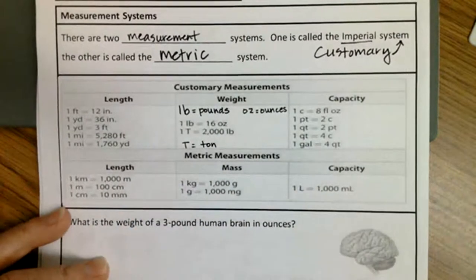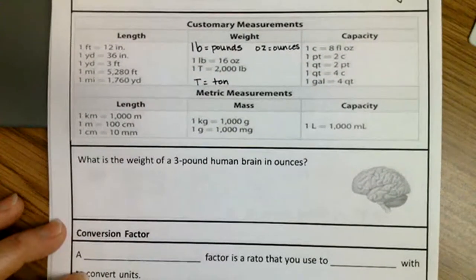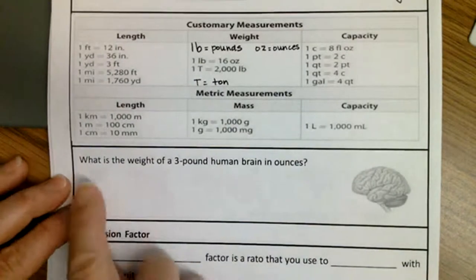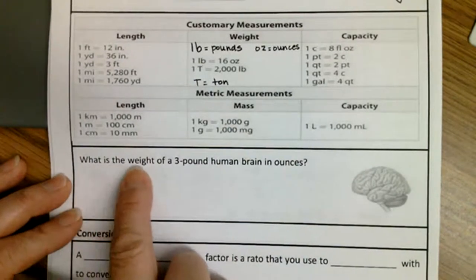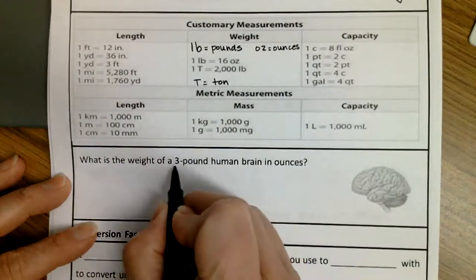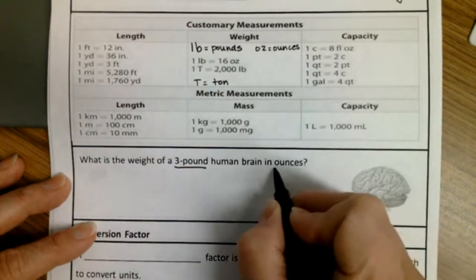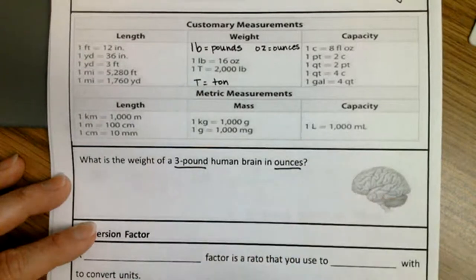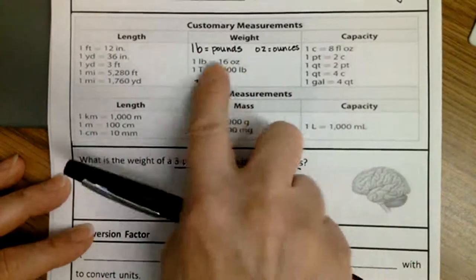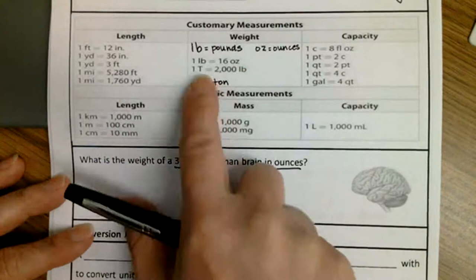Down here you have the metric system. We can use those tables to do what's called conversions — converting from one unit to another unit. So let's do an example. It says: what is the weight of a three-pound human brain in ounces? You have the weight in pounds and you want to convert that weight to ounces. You're going to use these tables. So we're looking for pounds and ounces.